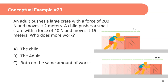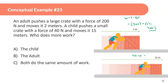Conceptual example 23: an adult pushes a large crate with 200 newtons and moves it 2 meters; a child pushes a small crate with 40 newtons and moves it 15 meters. Who does more work? Adult: 200 times 2 equals 400 joules. Child: 40 times 15 equals 600 joules. The child does more work — even though the child is less strong, moving the crate much farther results in more work done.